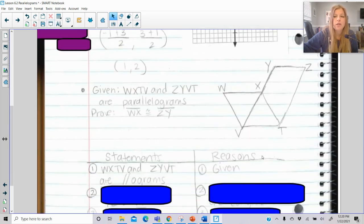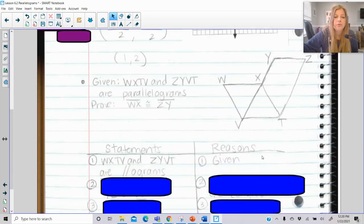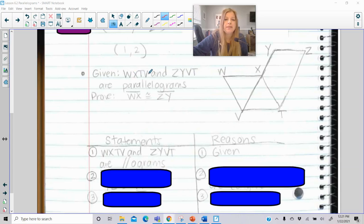The last problem I want to go through with you is a quick proof. Here it says W, X, T, V, and Z, Y, V, T are parallelograms. So here you have like these diagonal parallelograms that seem to overlap and make this triangle here. We are trying to prove that W, X is congruent to Z, Y. That is what we are trying to prove. We are given that we have this parallelogram and this parallelogram. So think about what we know.